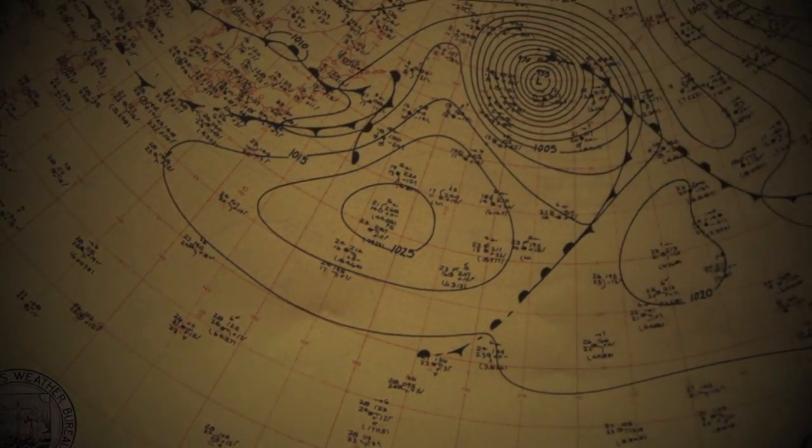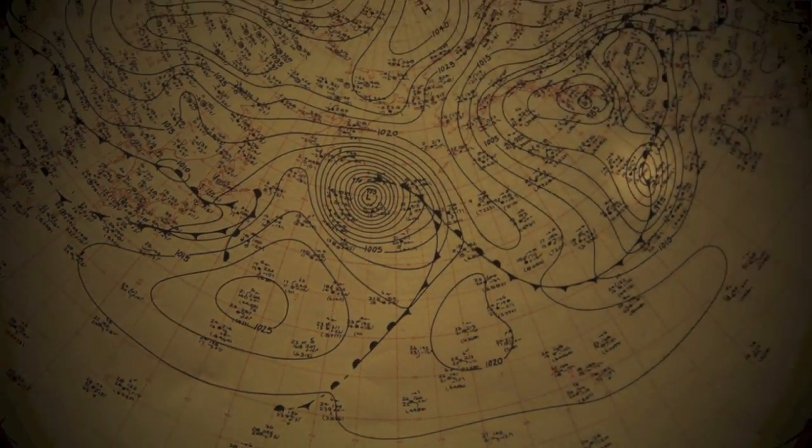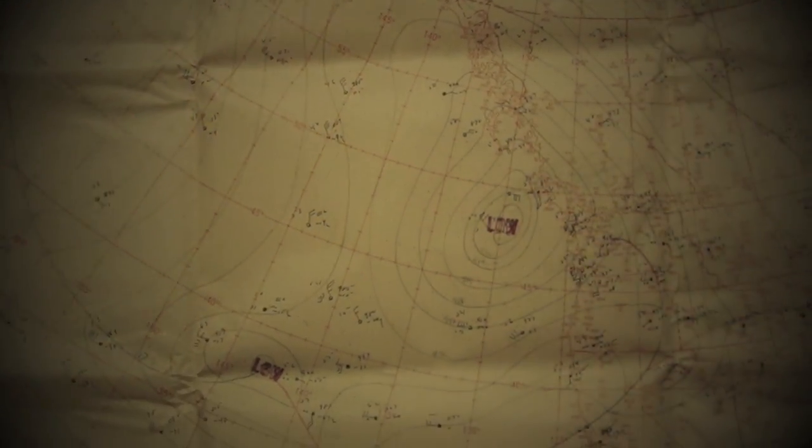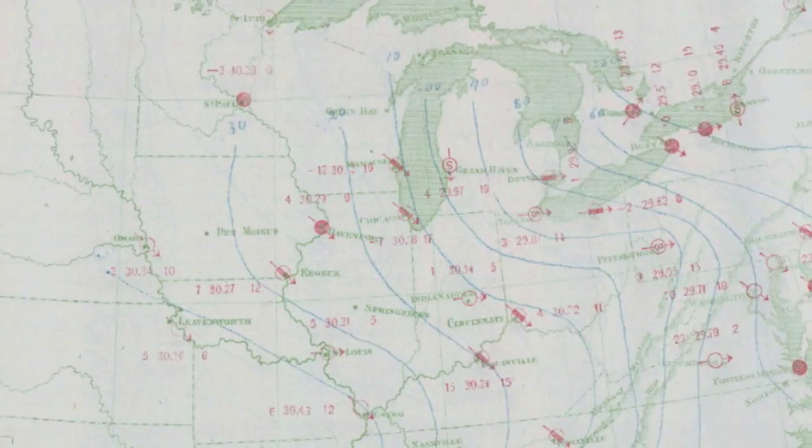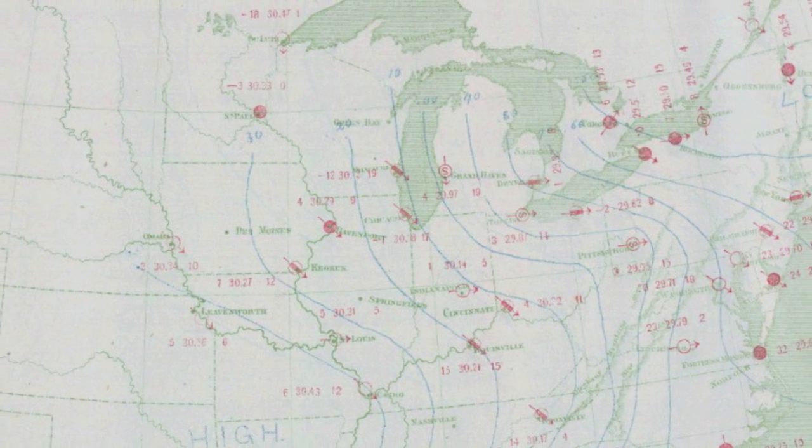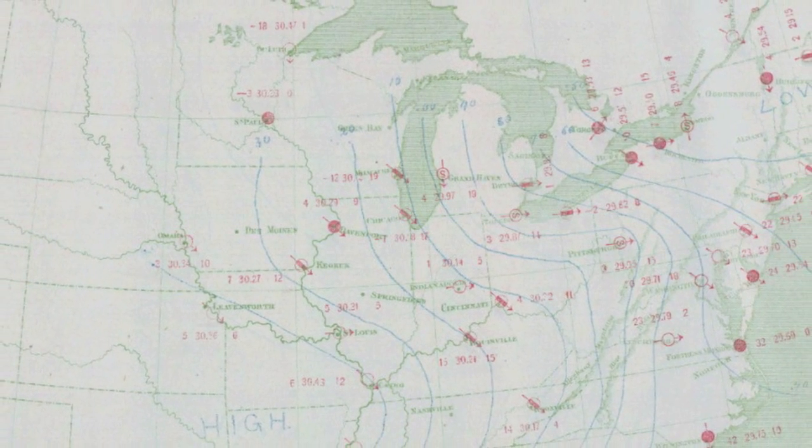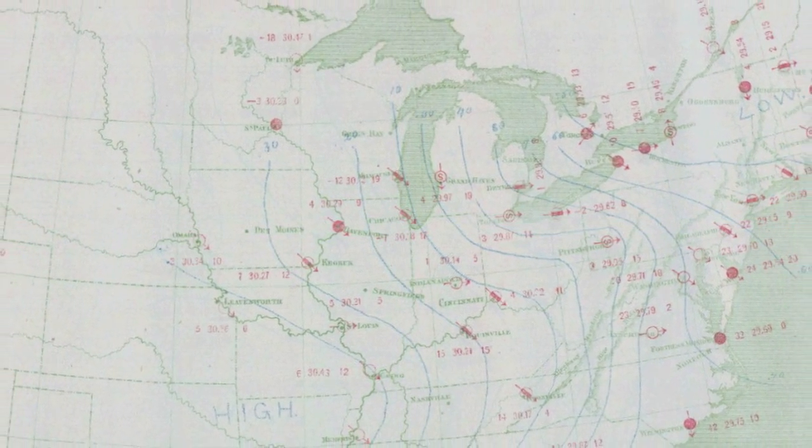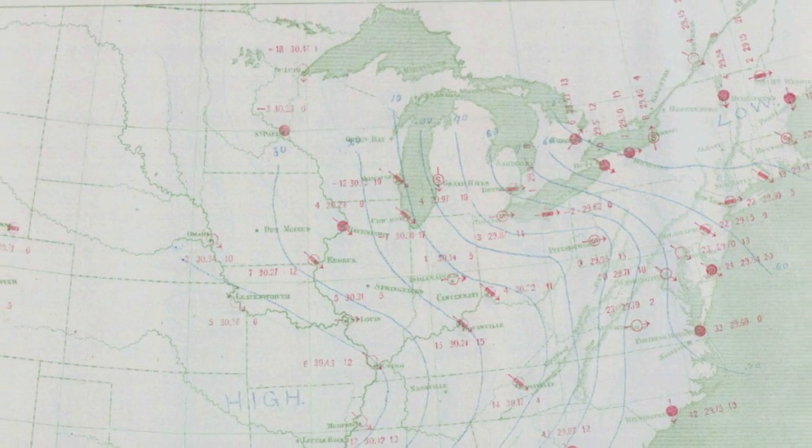Surface weather maps have been an invaluable part of conveying weather information for some time. In the United States, the US Army Signal Service, a predecessor to today's National Weather Service, began publishing surface map analyses in 1871.